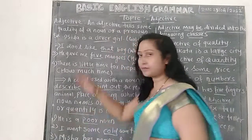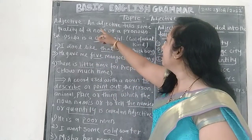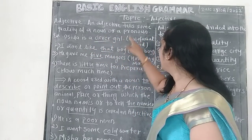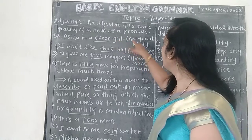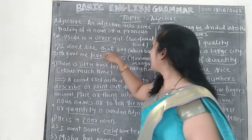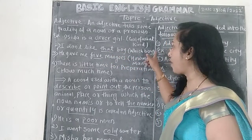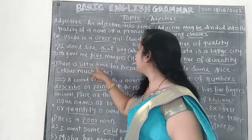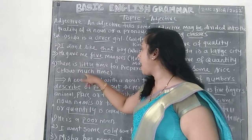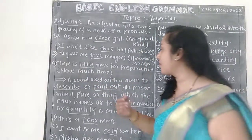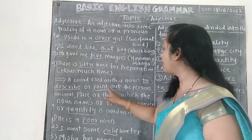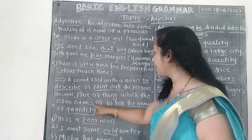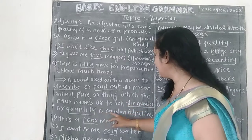Let's review once again. Definition: an adjective tells some quality of a noun and pronoun. Sita is a clever girl — 'clever' shows what kind of girl. I don't like that boy — 'that' shows which boy. He gave me five mangoes — 'five' shows how many mangoes. There is little time for preparation — 'little' shows how much time.